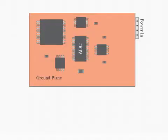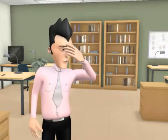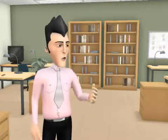Here's an example of a not-so-good layout. The customer expected about 92 dB signal-to-noise plus distortion, but he got closer to just 80 dB. Where did he go wrong?